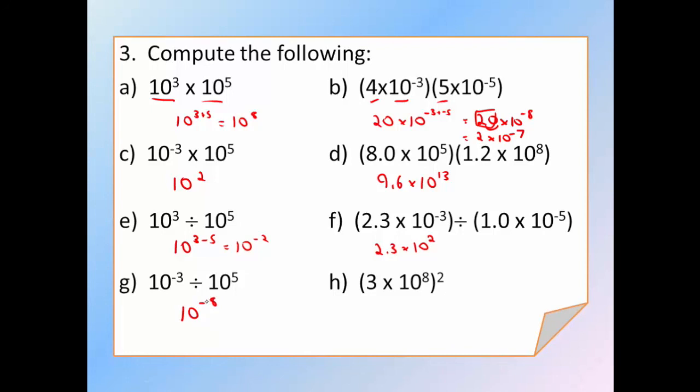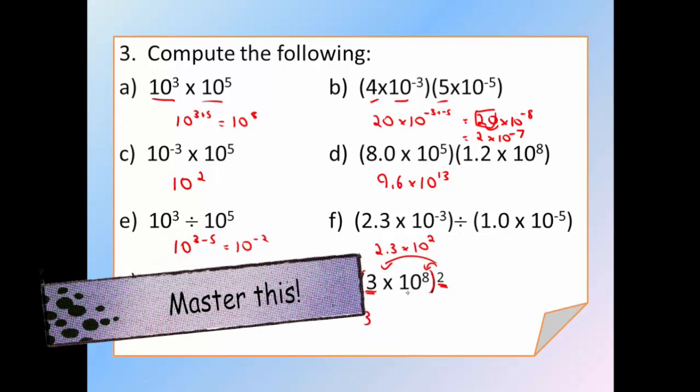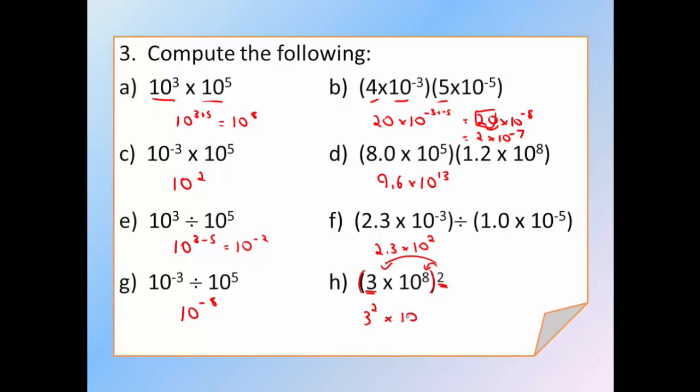The last exponent rule, which hopefully you all remember, is this idea. If you have an exponent outside of brackets, what you do instead is you multiply. So this base number here has to have the same power. So 3 squared times 10 to the 8 times 2. So when the number is outside of brackets, now you're multiplying the exponents. You're not adding them. So 3 squared is 9 times 10 to the 8 times 2, which is 16. And you're done.